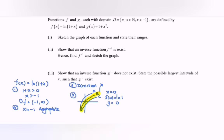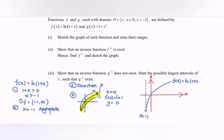Illustrating the situation: we have the asymptote at x equal to negative 1, and the graph of f(x) = ln(1 plus x) passes through coordinate (0, 0). The domain is negative 1 until infinity, where negative 1 is not included. The range is negative infinity until infinity.